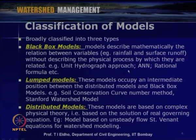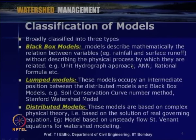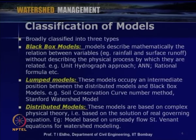Black box models are very simple and easy to use, but may not be universally applicable and have limitations since most physical processes are not considered. Examples include the unit hydrograph approach, artificial neural networks for rainfall-to-runoff modeling at a particular location, and the rational formula. In an artificial neural network, by collecting data for many years, we can identify a relationship valid for that particular location.